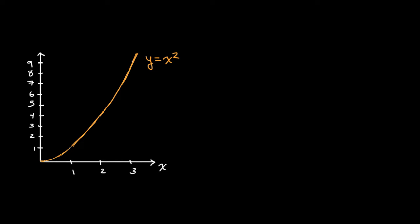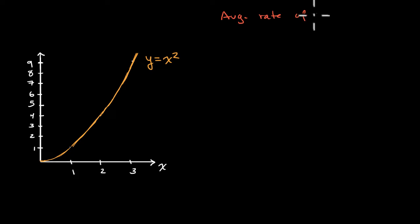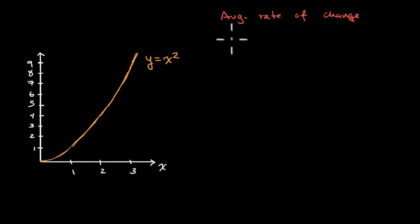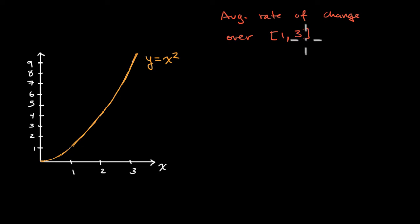Let me write that down. We want to know the average rate of change of y with respect to x over the interval from x going from one to three — a closed interval where x could equal one and x could equal three.